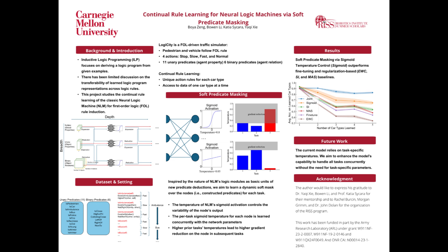A formula in first-order logic consists of predicates with their respective arguments, which are the objects, logic connectives like AND or NOT, and logic quantifiers like FOR ALL and EXISTS. Inductive logic programming is simply to learn a logic formula that maps from the initial predicates to a particular target predicate, based on a collection of positive and negative examples.